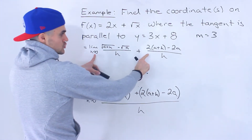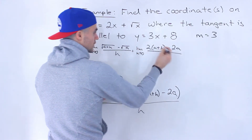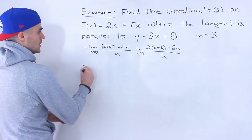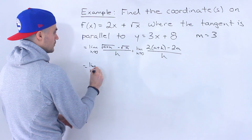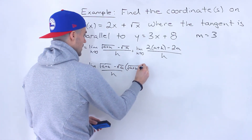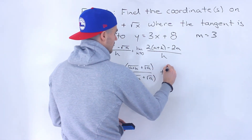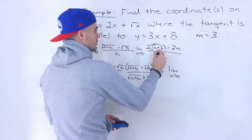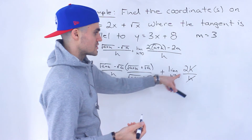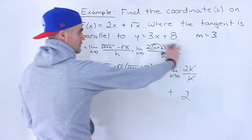It's a property of limits — you can distribute the limit to both expressions and work with them separately. For the second limit, 2a plus h minus 2a all over h: distribute, the 2a's cancel, we get 2h over h, the h's cancel, and we're left with just 2. So this part here ends up equaling 2.